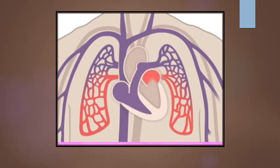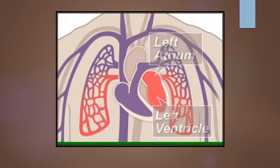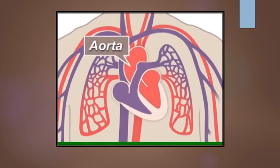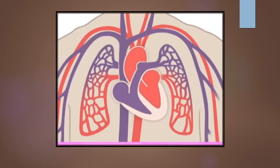Oxygen-rich blood, red blood, then enters the left side of the heart, composed of the left atrium and ventricle, and is pumped through the aorta to the body to supply tissues with oxygen.